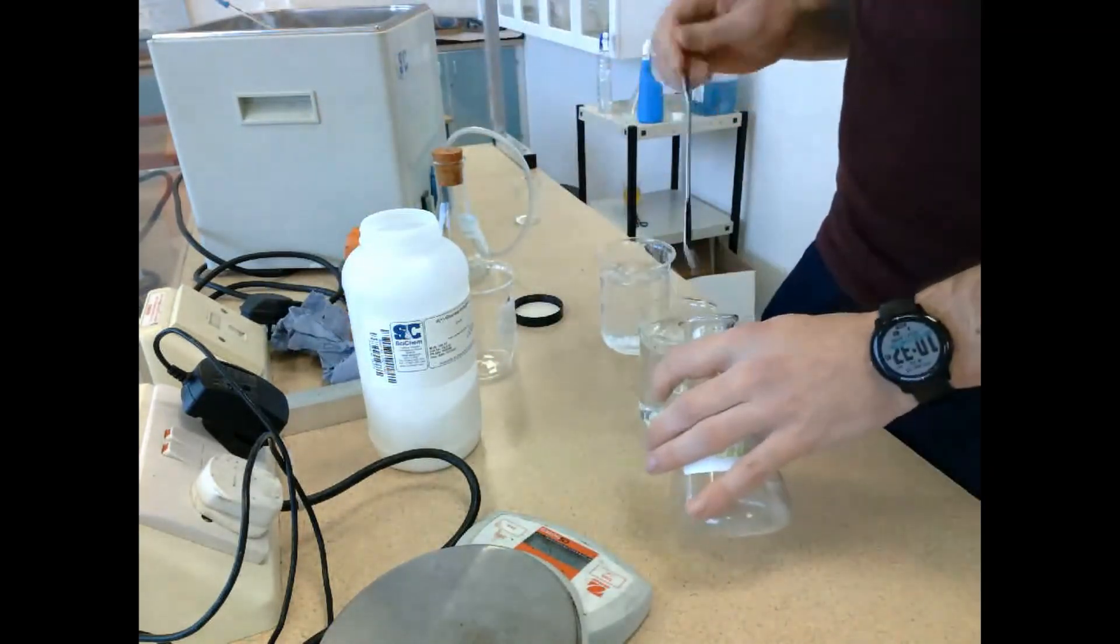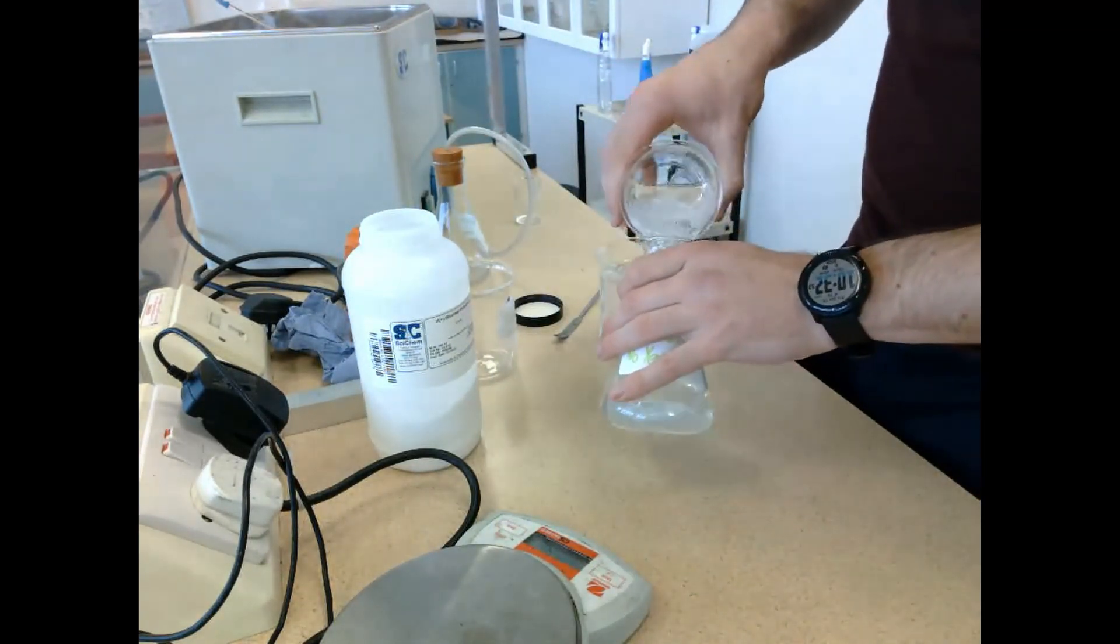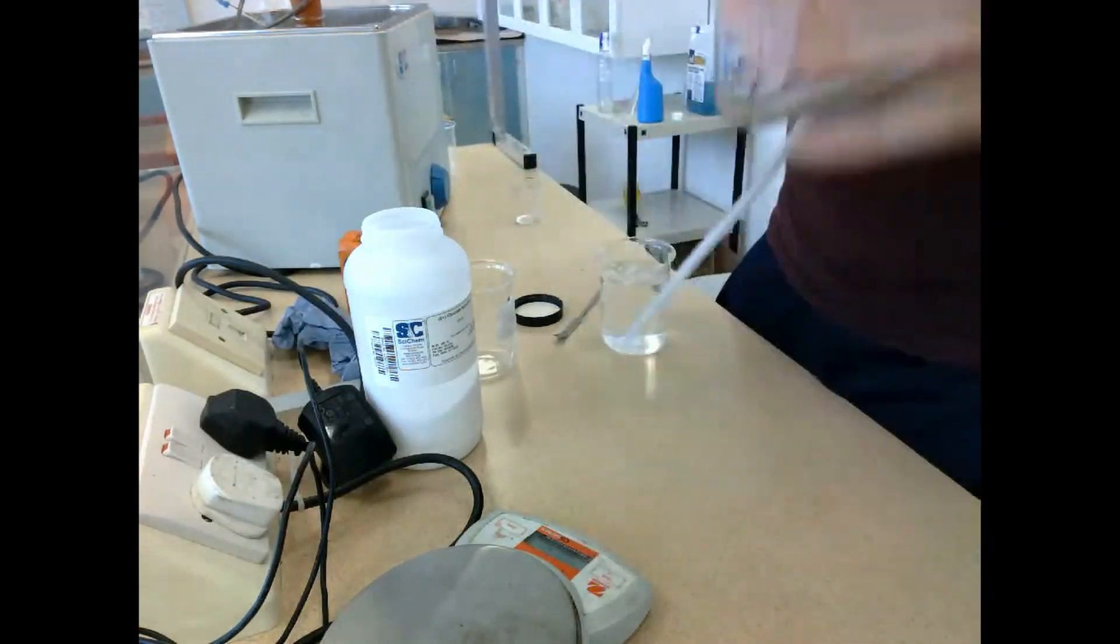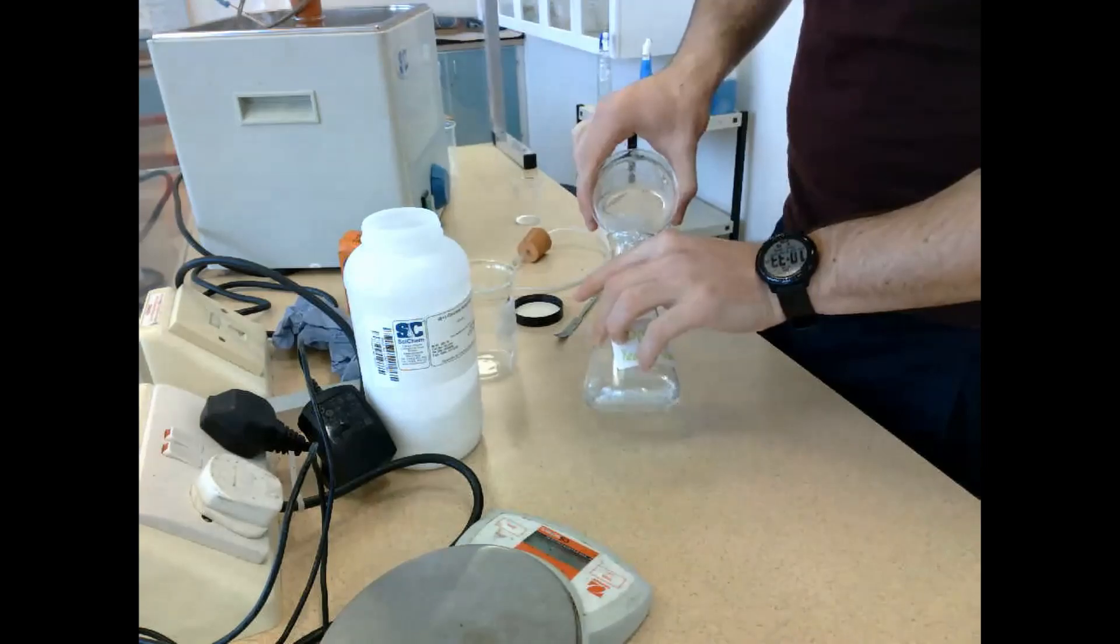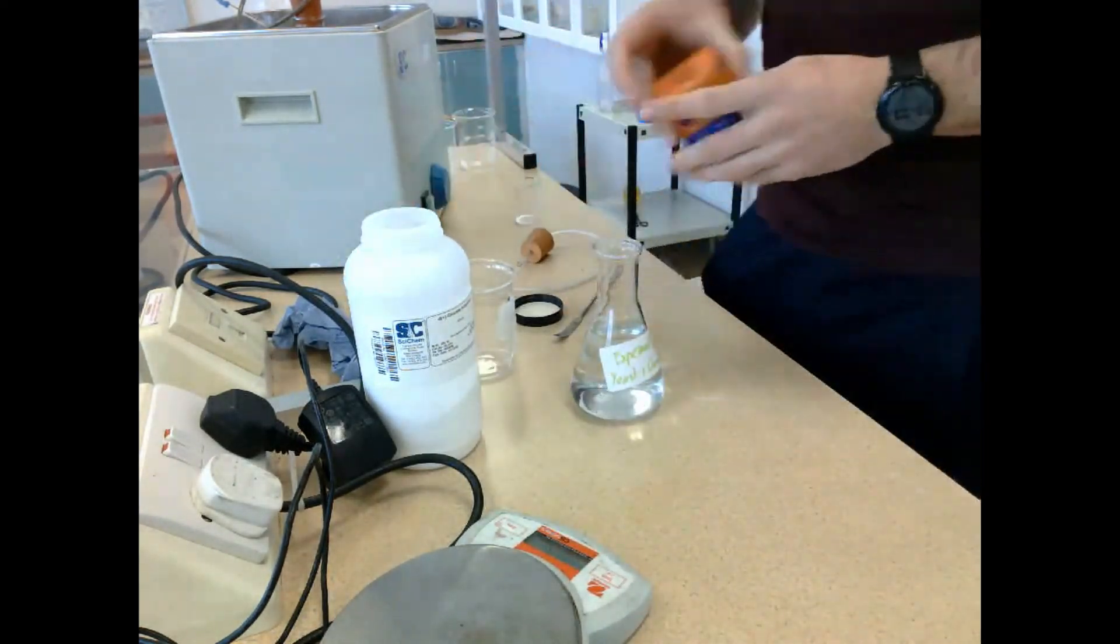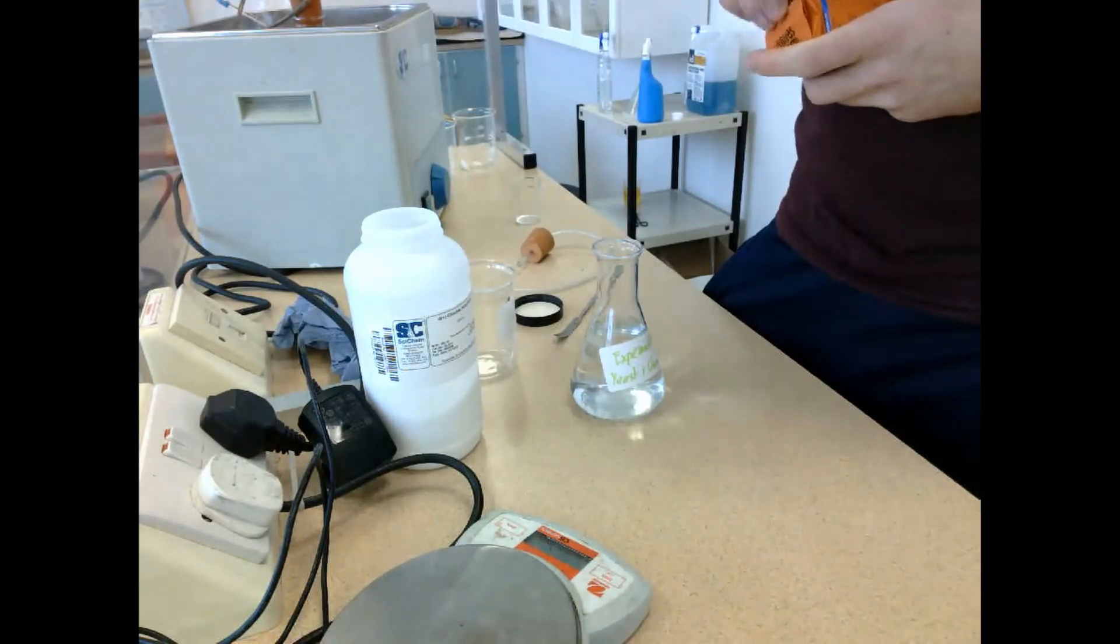Once we're happy it's dissolved, we then take our conical flask and we add the first beaker into the control flask. This is just going to be glucose in boiled water and it's going to be placed in the water bath at 25 degrees for the duration of this experiment.